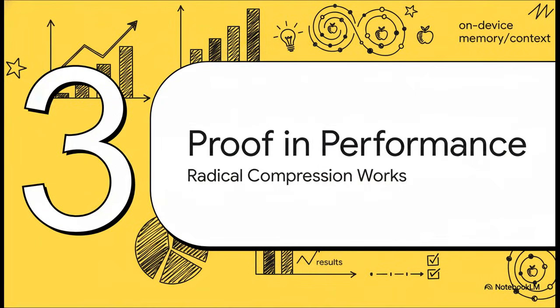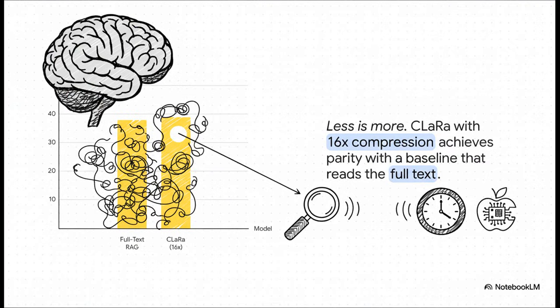Okay, so the theory is cool, but does it actually work in practice? Well, this is where the research results get kind of shocking. Let's take a look at the actual data. This is, wow, just look at this. On a really complex reasoning test, the standard method, reading the full text, scores a 38. But CLARA, using data that's been compressed 16 times, I mean, it's seeing just a tiny fraction of the original information, it actually performs better. That's right, better. By getting rid of all the noise, it helps the AI focus. It's the ultimate proof that sometimes less really is more.